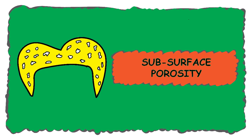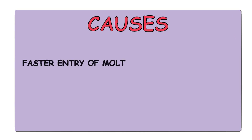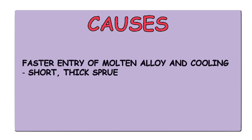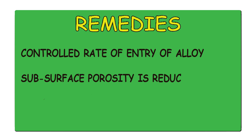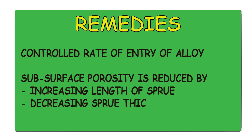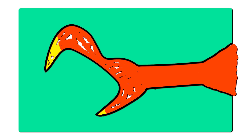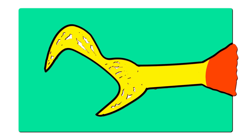The next porosity is subsurface porosity. It is created by the turbulent flow of molten metal into the mold, which traps air within the mold. Due to simultaneous solidification of the metal and the trapped air, subsurface porosities are caused. This results from a short and thick sprue, which causes faster entry of molten alloy. Subsurface porosity can be prevented by controlling the rate of entry of the alloy into the mold — by increasing the length of the sprue and decreasing the sprue thickness. In the animation, the thick and short sprue causes turbulent flow instead of lamellar flow, entrapping air within the mold. When this entrapped air solidifies simultaneously with the molten alloy, subsurface porosities are formed.